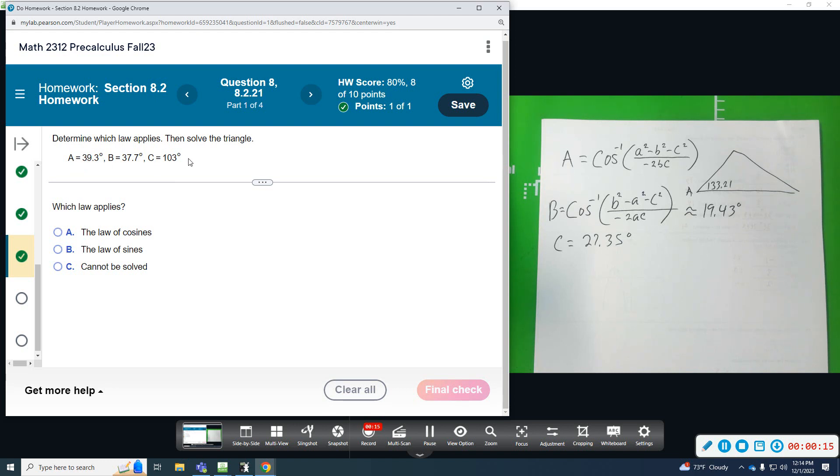We need at least one of those sides to use the law of sines, and we would have to have two sides to use law of cosines. We don't have anything that uses all three angles, so we're going to say that this one cannot be solved.